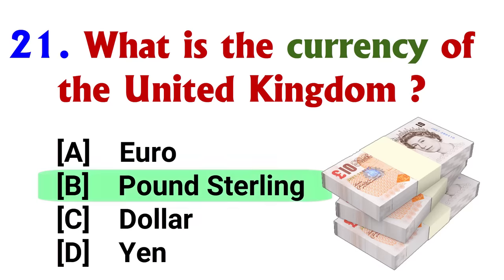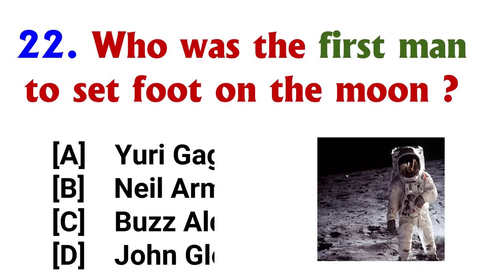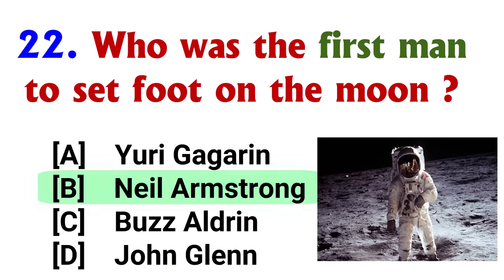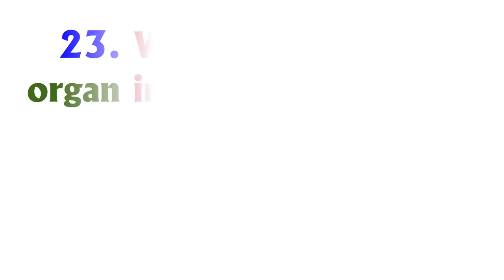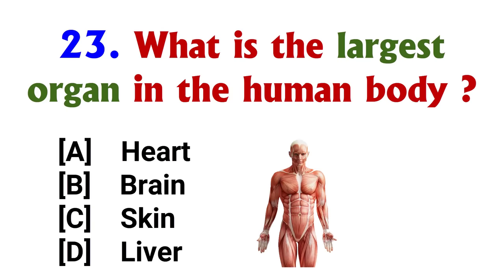Which gas makes up the majority of Earth's atmosphere? Answer: option C, Nitrogen. What is the currency of the United Kingdom? Answer: option B, Pound Sterling.